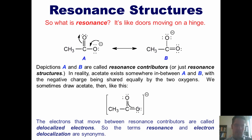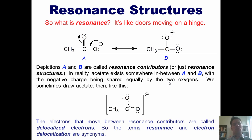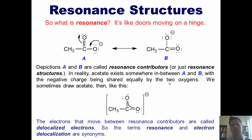You might ask yourself: why is it so much more stable to have a resonance structure than to not have one? Having a negative charge on an atom, even one as electronegative as oxygen, is a burden. It's much easier and more stable to have that burden shared by multiple oxygen atoms than having one oxygen atom bear it alone. Just like moving a piano, carrying a negative charge is much easier to do when you're able to do it with a group of friends.